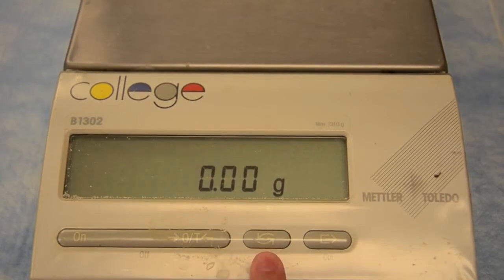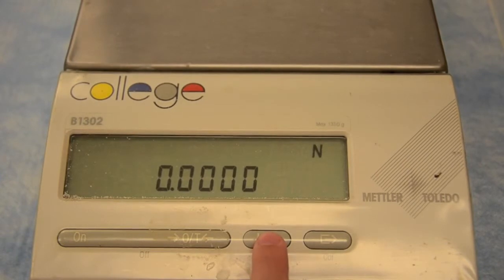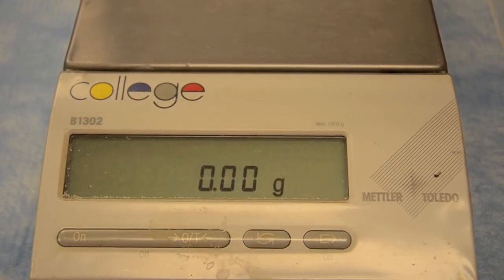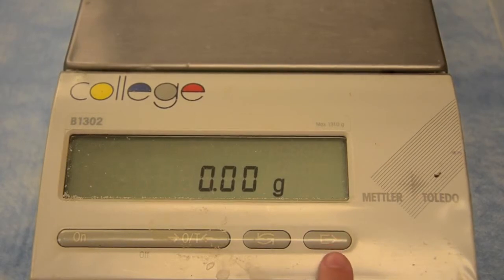This button changes between the modes of measurement. Right now we're in grams, but if we press the button, we'll go into newtons. You very rarely want to use newtons, so always make sure before using the balance that it's on grams. This button is for calibration and should not be pushed.